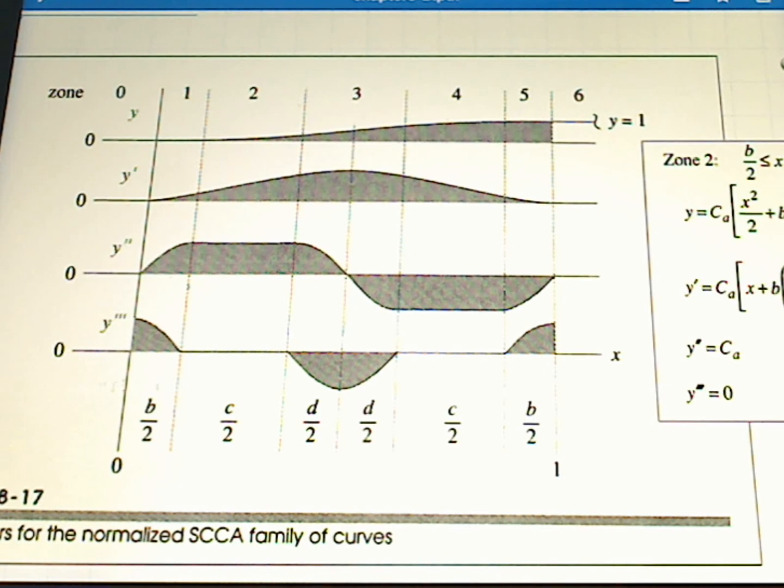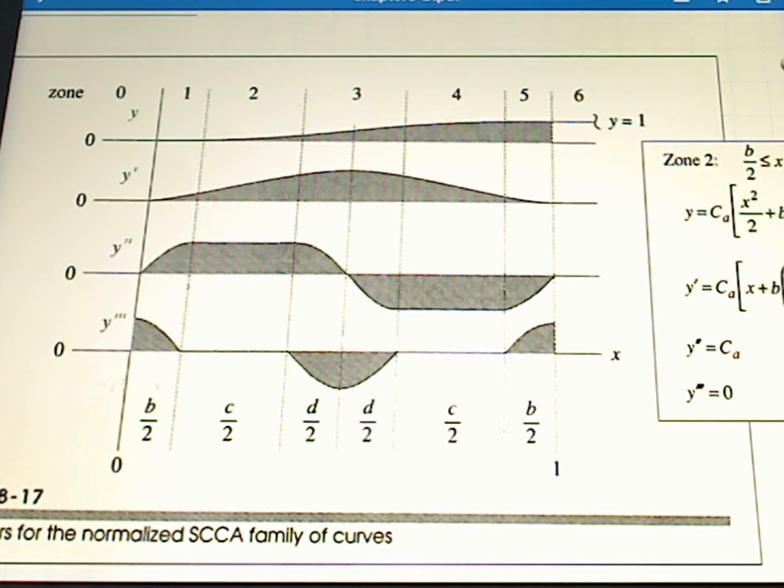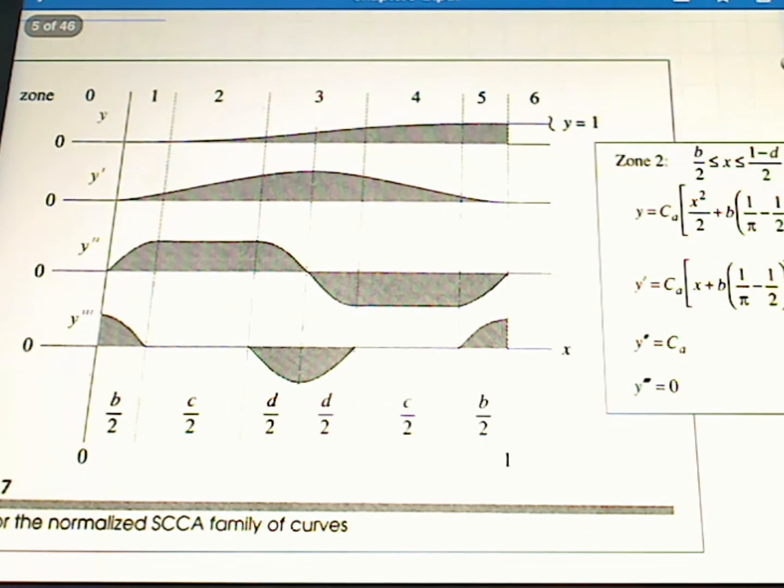Now we know in our particular case, we want to rise two inches, and so we simply multiply this function by two inches. Now let's focus in on these different zones. There are five zones here, and we're going to focus in on the equations for zone two.